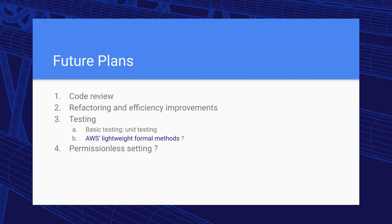The team clarifies the testing approach: they do unit tests per package rather than end-to-end integration tests, and the way correctness is verified is by hoping for the best in terms of system behavior. The question is raised whether AWS formal methods could be applied to this project.